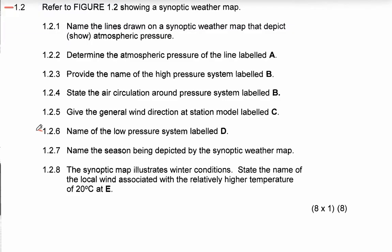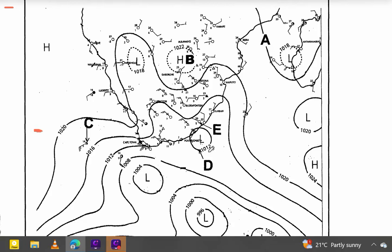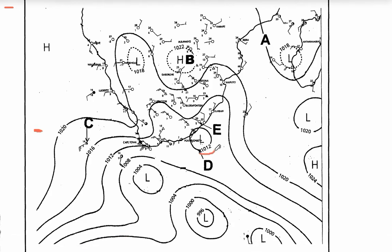Question 1.2.6: give the name of the low pressure system labeled D. This low pressure system is the coastal low. The coastal low forms on the west coast and moves from west to east toward the east coast. That is the answer for 1.2.6.